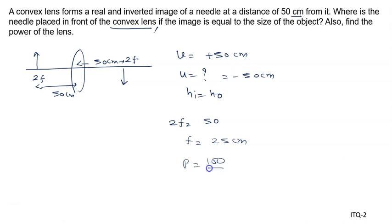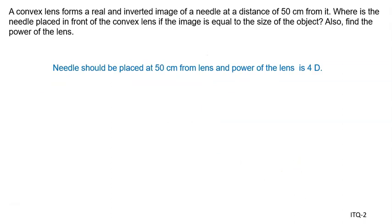Power is given by 100 by f in centimeters, so it is 100 by 25. 100 by 25 means 4 diopters. So needle should be placed at 50 cm from the lens and power of the lens is 4 diopters.